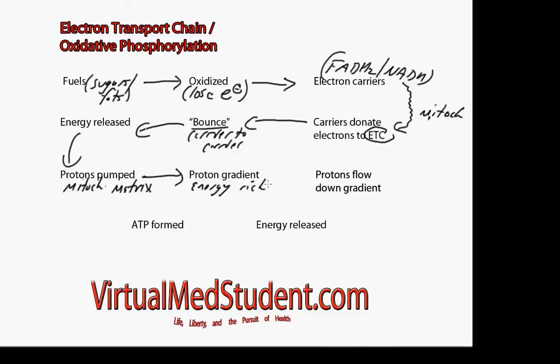At a certain point, those protons that got pumped out of the mitochondrial matrix will flow back down their gradient, back into the matrix of the mitochondria. When they flow down their gradient, they release energy as well. That energy is specifically coupled to the formation of an energy-rich molecule known as ATP.